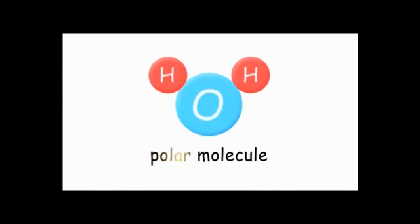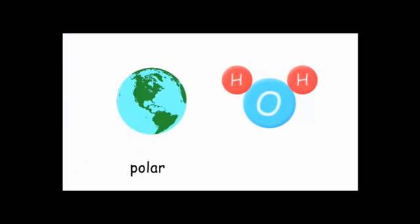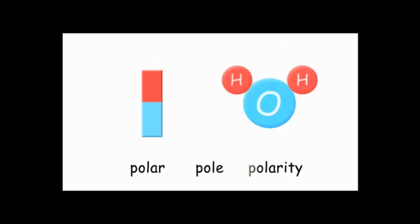H2O is a polar molecule. The same way our planet has north and south poles on opposite sides, the H2O molecule has two poles on opposite sides. And like a magnet, H2O has one positive end and one negative end.